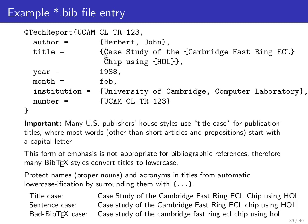So whenever you type into a .bib file a string like 'Case Study of the Cambridge FastString ECL Chip using Hull', if you haven't protected with additional curly braces any proper names, proper nouns, or acronyms in this title, BibTeX will automatically force everything except the first letter to lowercase. So you'd end up with 'cambridge', 'faststring', 'ecl', and 'hull' all lowercased. Instead, normal nouns like 'study' or 'chip' should be lowercase, but names should preserve their capitalization. You do this by putting curly braces around anything you don't want lowercased.